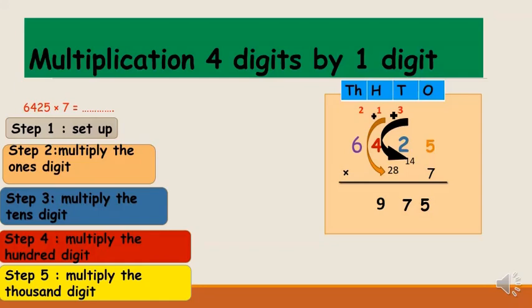Now 7 will multiply the thousand digit. 7 times 6 is 42. 42 plus 2 is 44. I'm going to write all 44 down because there is no more digit to regroup. So the answer is 44,975.